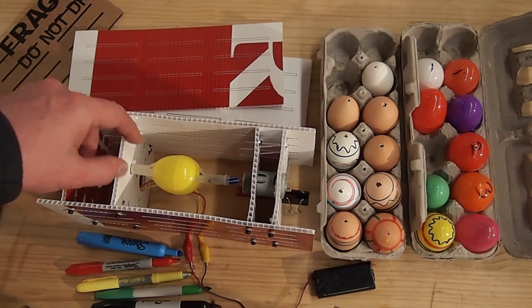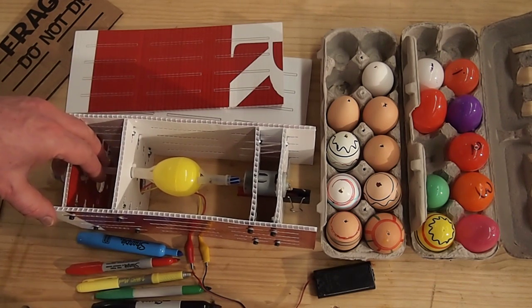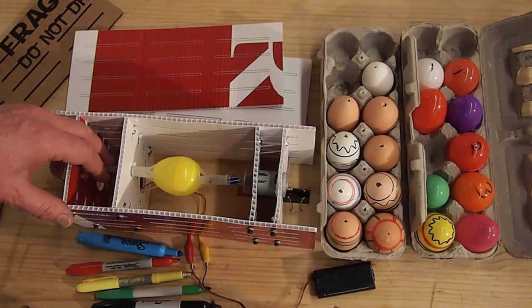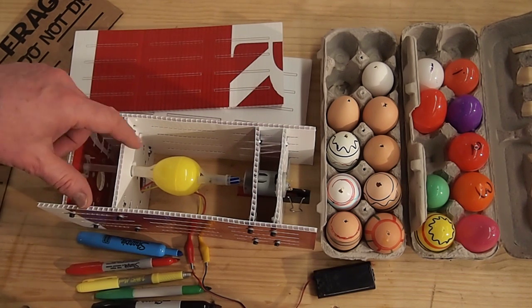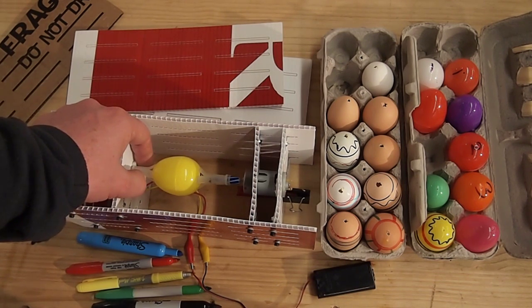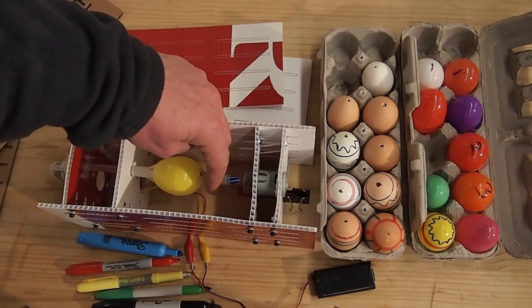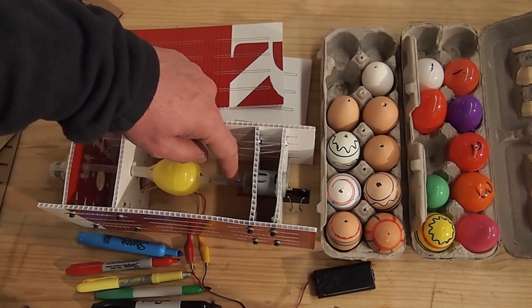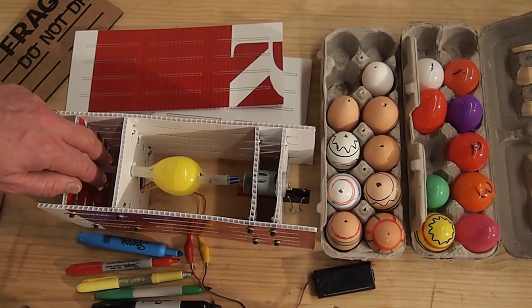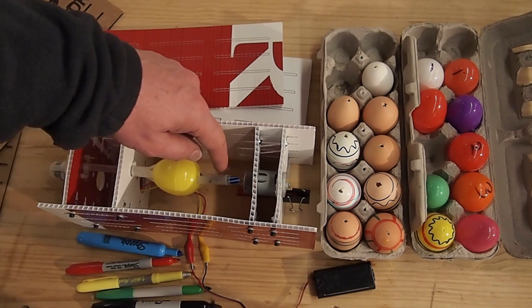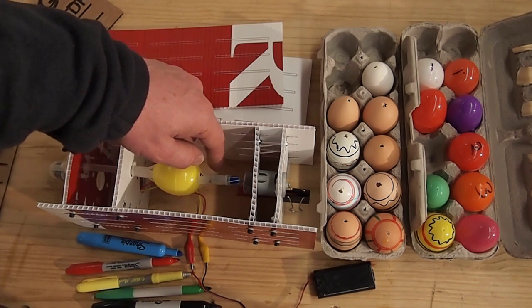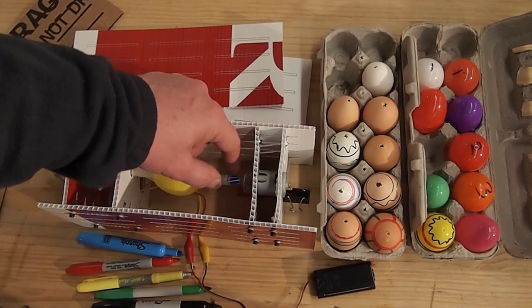The axle is made out of a plastic ballpoint pen, and it grips onto the egg with this pen grip that came off of a pen. There's another pen grip here on the other side. The other side of the pen holds onto this motor shaft right here.